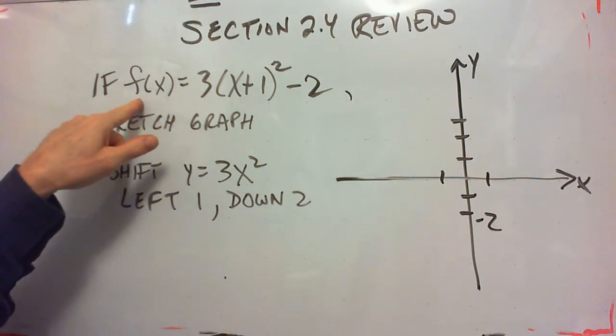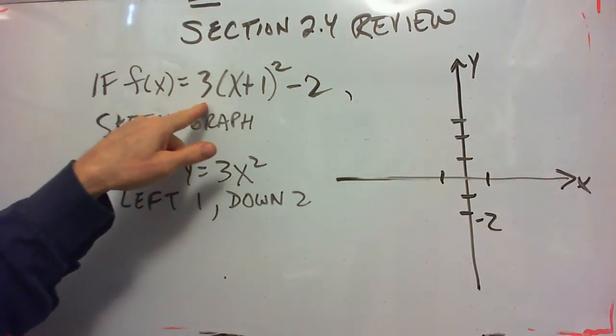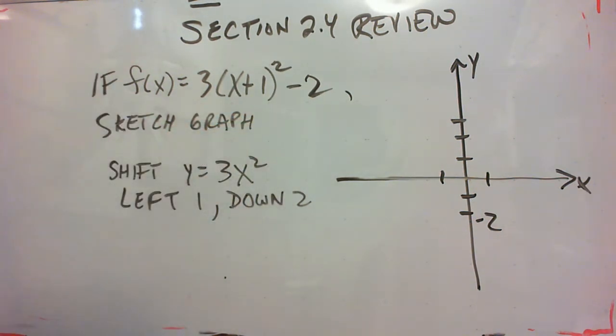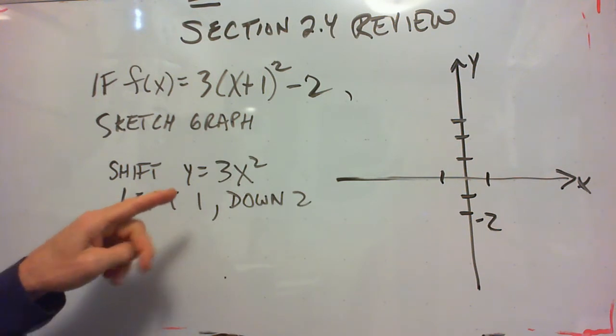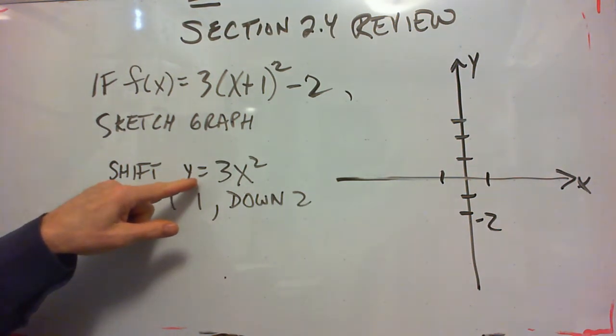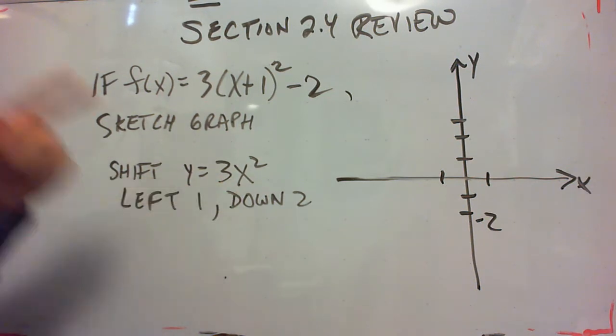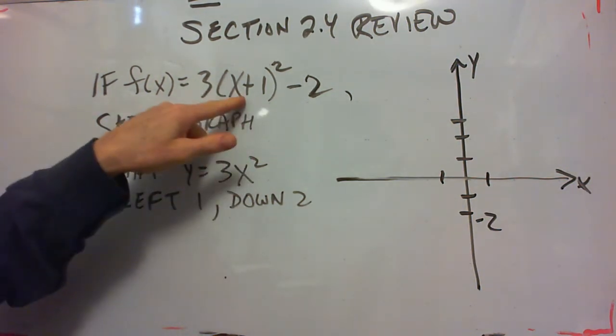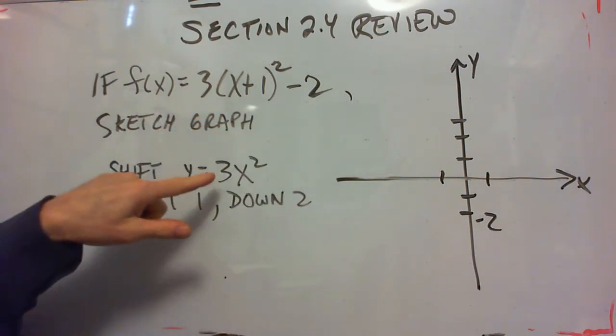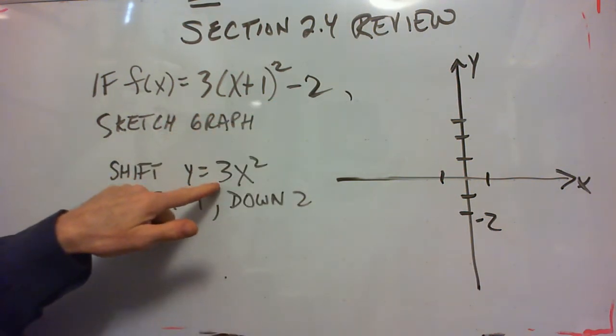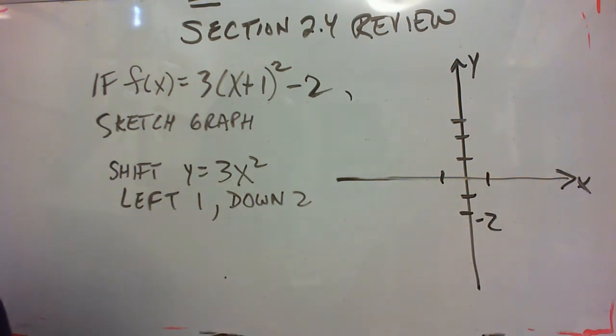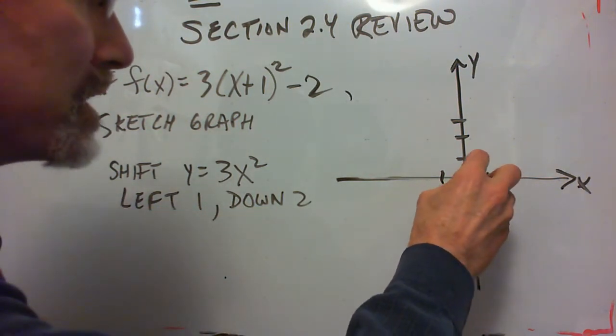It's like number two of the homework. If f of x is 3 times x plus 1 squared minus 2, sketch the graph. And here we see that this is a shift of y equals 3x squared. And we're replacing the x with x plus 1 and we're subtracting 2. So that means this is a shift of y equals 3x squared, left 1, down 2. I'm going to start by just graphing 3x squared.